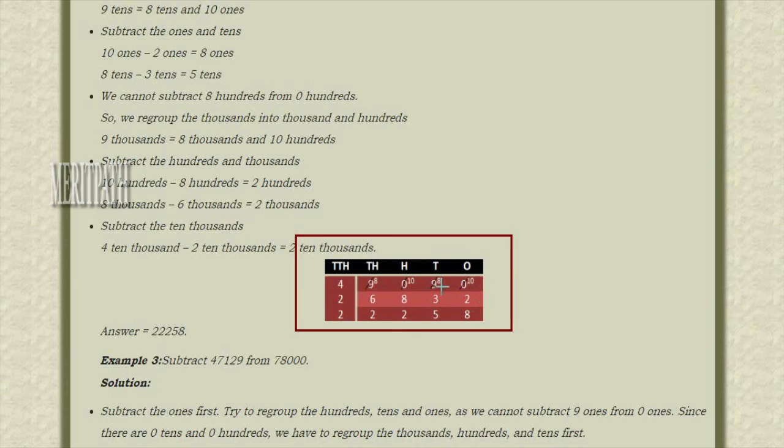When we have taken carry from these numbers, from this 9, this becomes 8, and we will get 1 from here. So this 0 becomes 10. 10 minus 2 is 8.